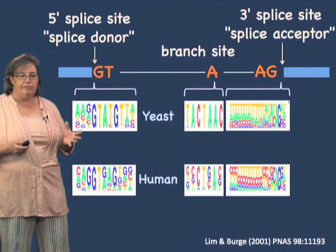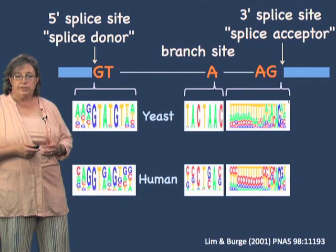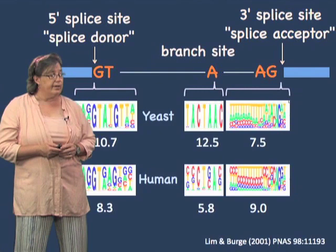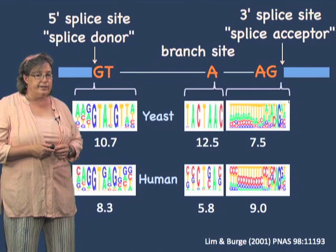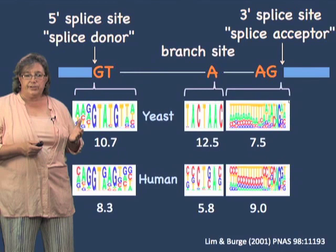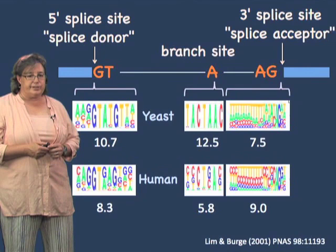We can quantify the amount of information in these sequences using the terminology from computer science — bits of information. Chris Burge and co-workers did a study on a number of very short introns, the shortest introns in humans, and also the introns in yeast. They derived these consensus sequences, and these consensus sequences have this much information in them.